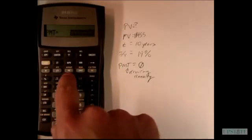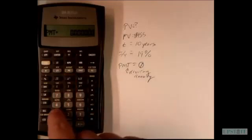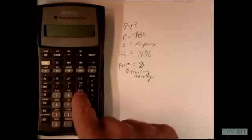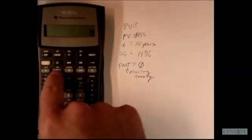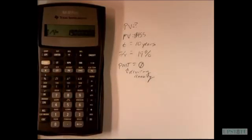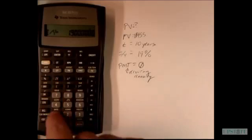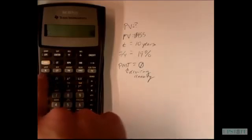We are solving for present value. And then our interest rate is 19%, so we're going to hit 19 and then hit the I over Y. And then we are going to hit the 10 years, 10, and then hit the N.